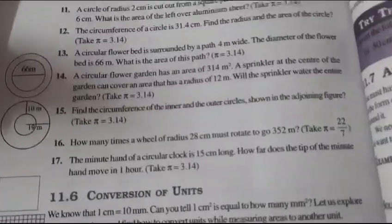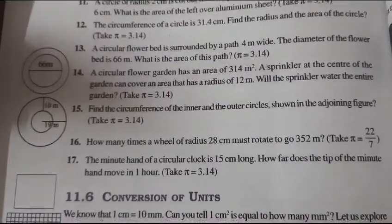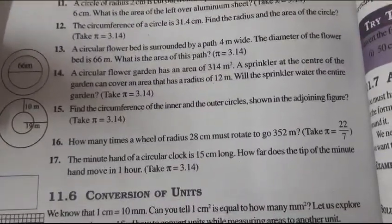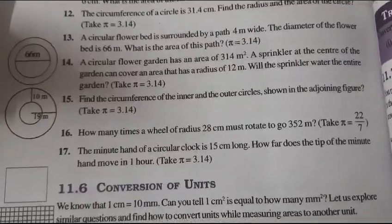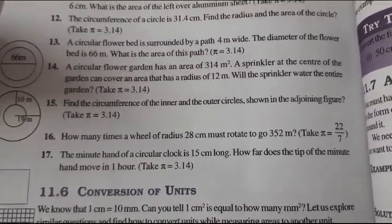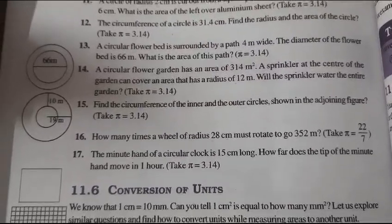Good morning students, today I'll continue with question number 14. A circular flower bed has an area of 314 meter square. A sprinkler at the center of the garden can cover an area that has a radius of 12 meters. Will the sprinkler water the entire garden? Take pi is equal to 3.14.